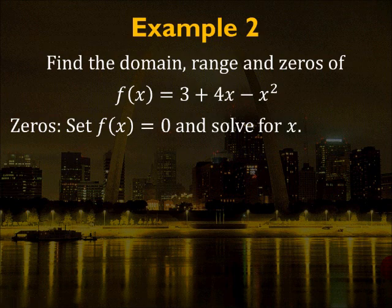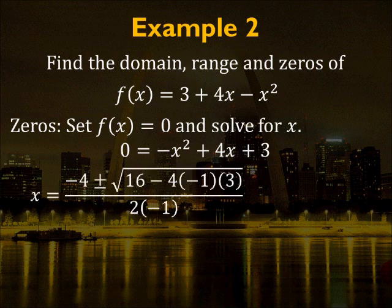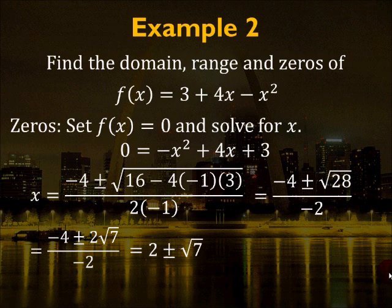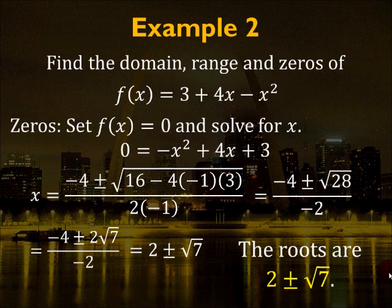To find the zeros, set f(x) = 0 and solve for x. We have 0 = -x² + 4x + 3. Using the quadratic formula: x = (-(-4) ± √(4² - 4(-1)(3))) / (2(-1)) = (-4 ± √28) / -2. Simplifying gives x = 2 ± √7. Those are your roots. You can find zeros by setting f(x) = 0 and solving using factoring, the quadratic formula, or completing the square.